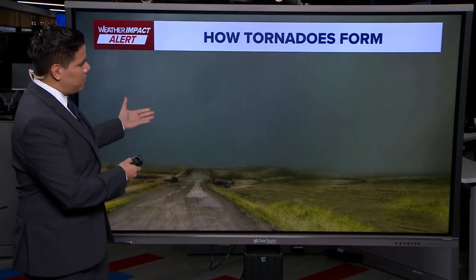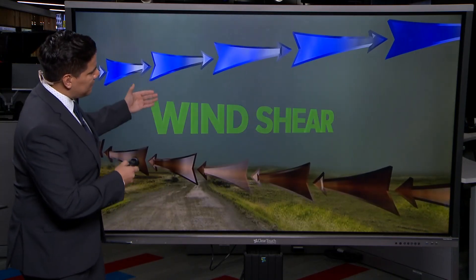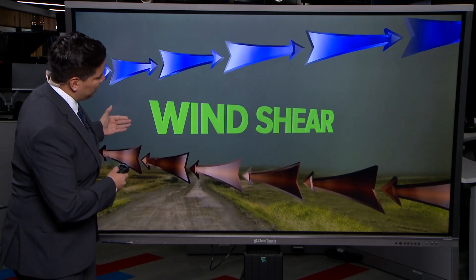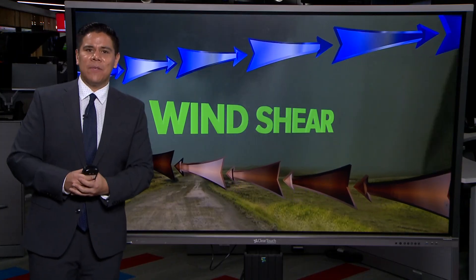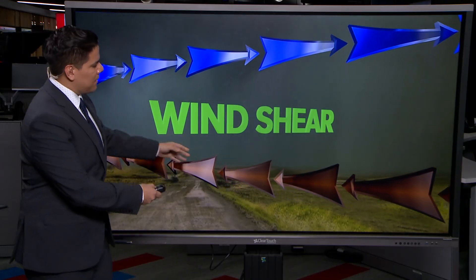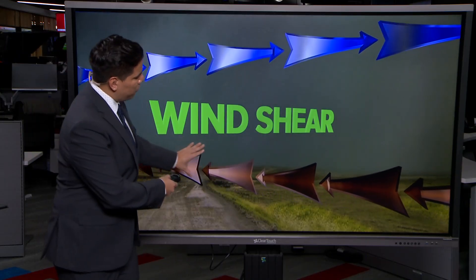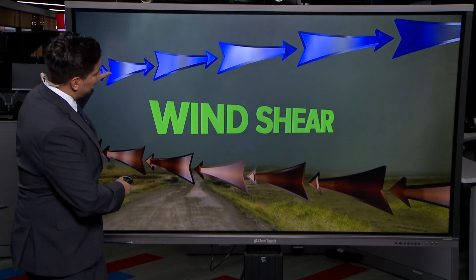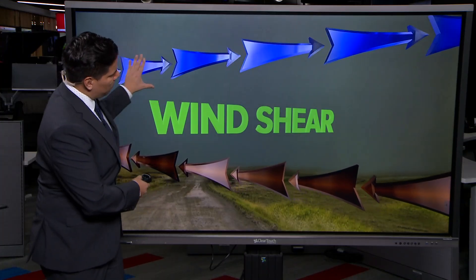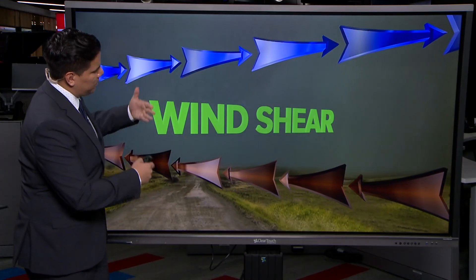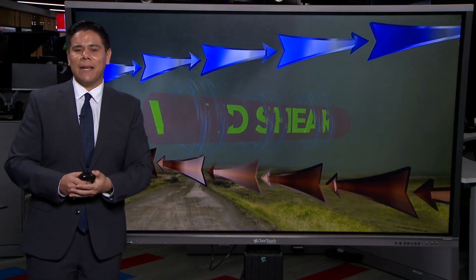We need the important ingredients for a severe storm, which we saw today. How these funnel clouds formed comes down to wind shear — wind at different levels of the atmosphere. We have the gulf winds moving in, bringing in that moist, warm air, and then the approaching cold front moving in from the northwest. When these two ingredients combine,